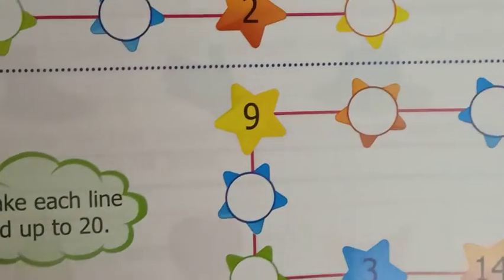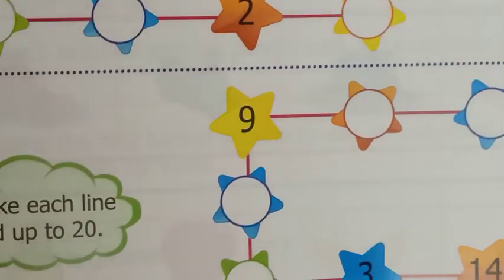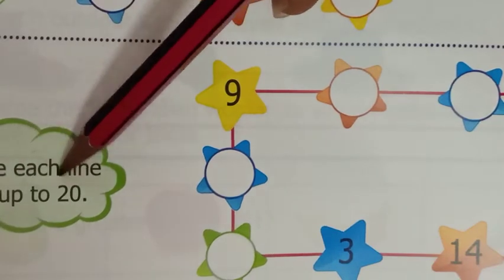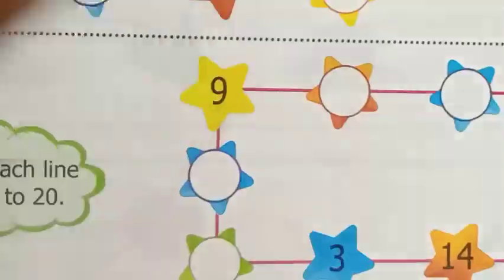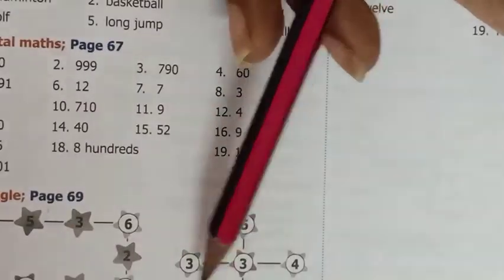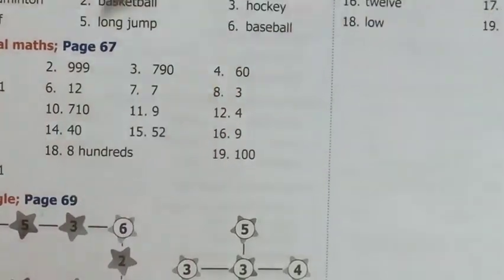Up to 16 you have to add. Make each line add up to 20. Up to 20 you have to add, and you have to see the answers in the correction.